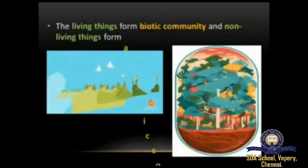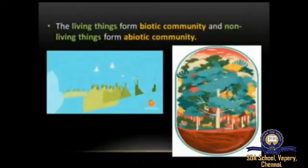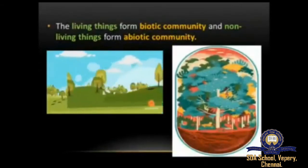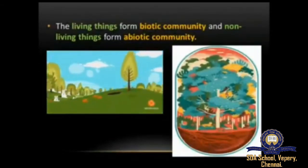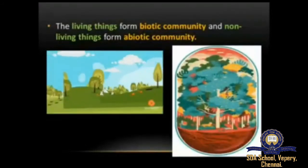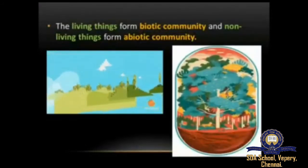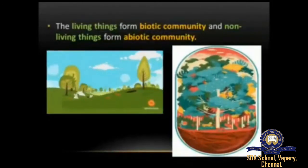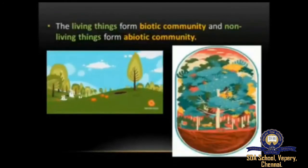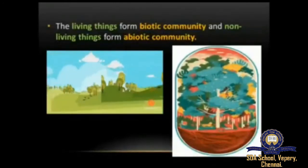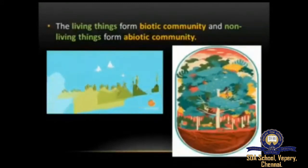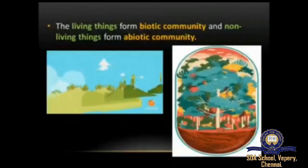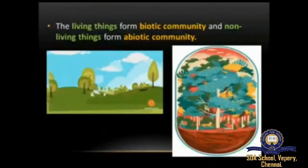The living things form the biotic community and the non-living things form the abiotic community. The biotic community includes all living things, and the abiotic community includes all non-living things. Biodiversity includes the variety and variability among living organisms and the habitats in which they live, including ecosystems occurring in deserts, forests, mountains, lakes, rivers, and agricultural fields.